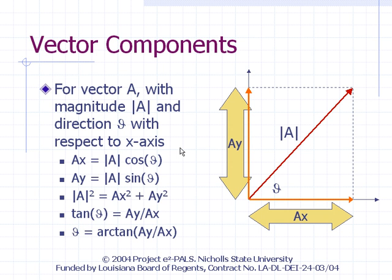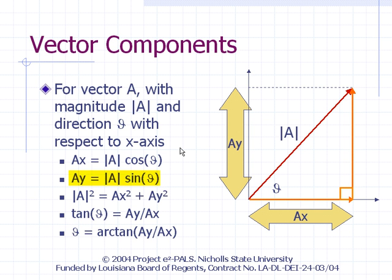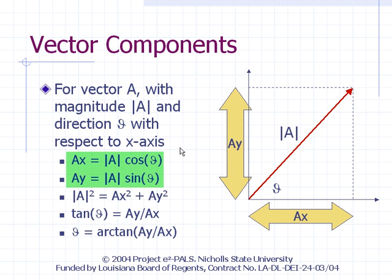It is important to note that the vertical and horizontal components of any vector are related to the magnitude and direction in the same way that Cartesian coordinates are related to polar coordinates. From basic trigonometric identities and the Pythagorean theorem: AX equals the magnitude of A times the cosine of theta, and AY equals the magnitude of A times the sine of theta. The square of the magnitude of A equals the square of AX plus the square of AY. The ratio of AY to AX equals tangent theta, and theta equals the inverse tangent of AY over AX. The first two equations allow you to calculate components from magnitude and direction; the last two allow you to calculate magnitude and direction from components.